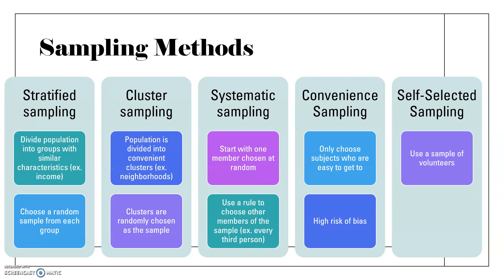For self-selected sampling, you use a sample of volunteers — you ask who wants to answer your survey. This also has a high risk of bias, similar to the voter example: when you ask 'are you willing to answer some questions,' you are allowing a degree of self-selection that can skew your results.